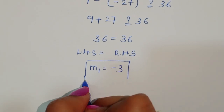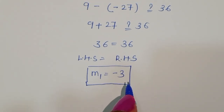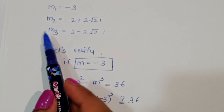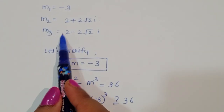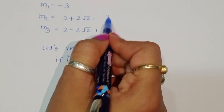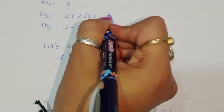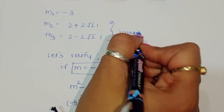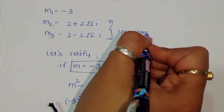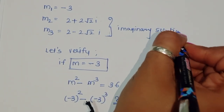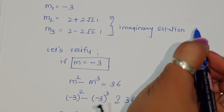In summary, the value of m₁ is equal to minus 3. The value of m₂ is equal to 2 plus 2 square root of 2 i, and the value of m₃ is equal to 2 minus 2 square root of 2 i. These last two are imaginary solutions for this equation. Thank you.